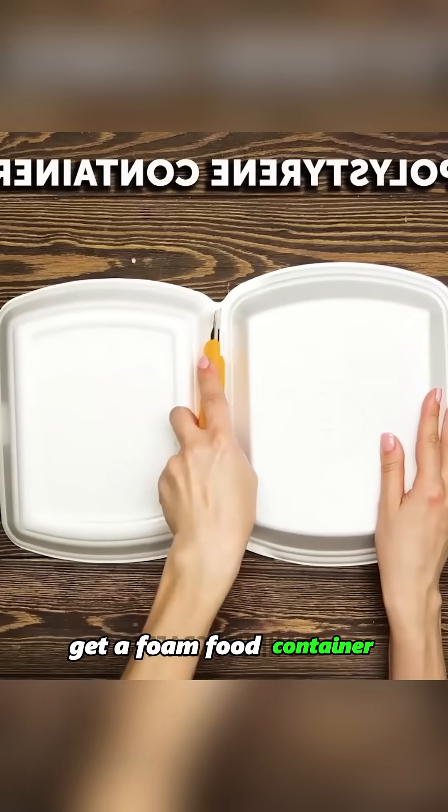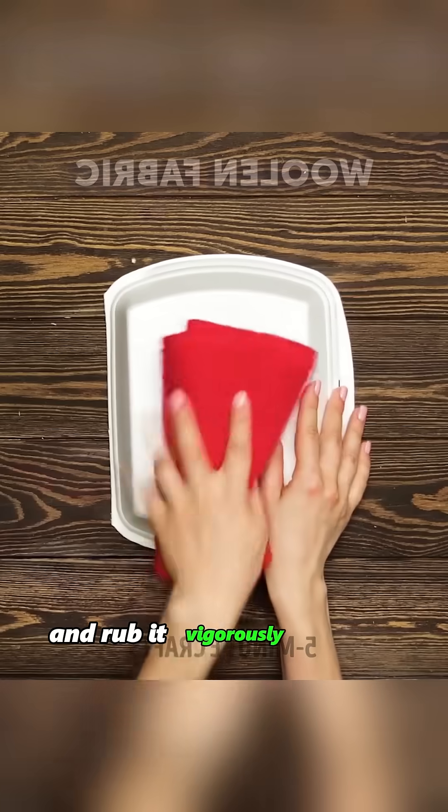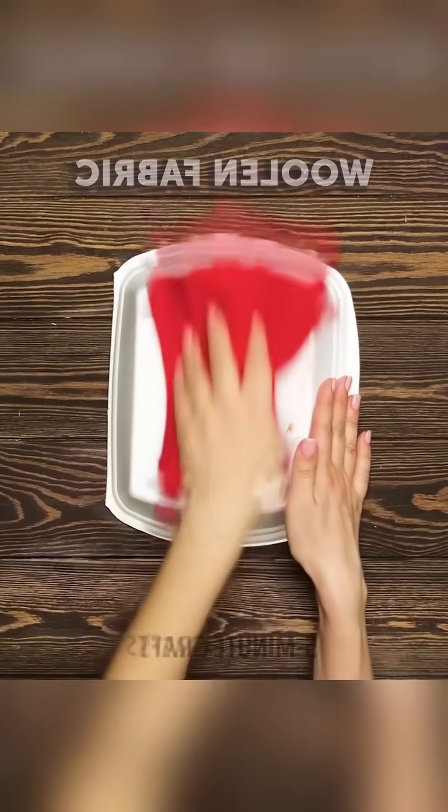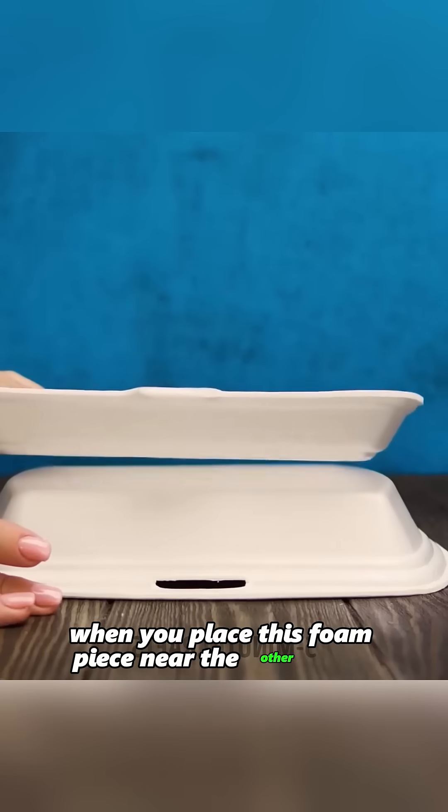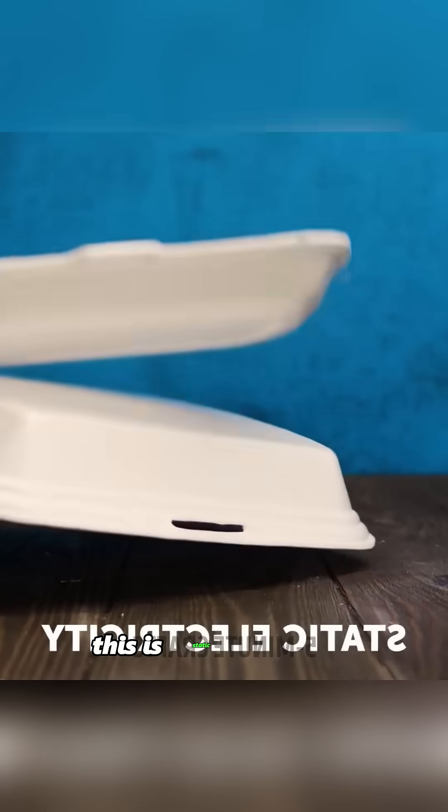Get a foam food container and cut it in half with a craft knife. Then take a wool scarf and rub it vigorously against one piece of foam. When you place this foam piece near the other piece, the bottom piece gets attracted upward. This is static electricity.